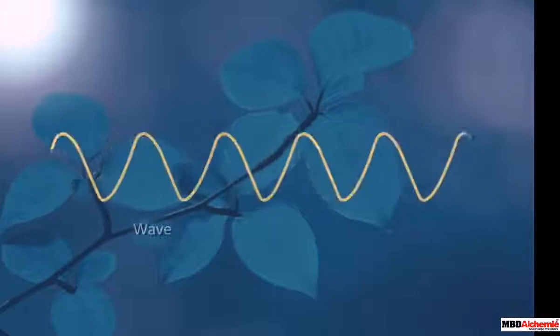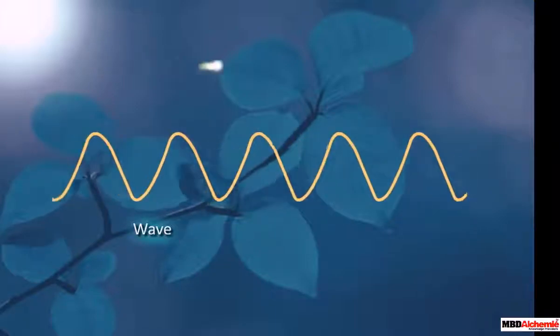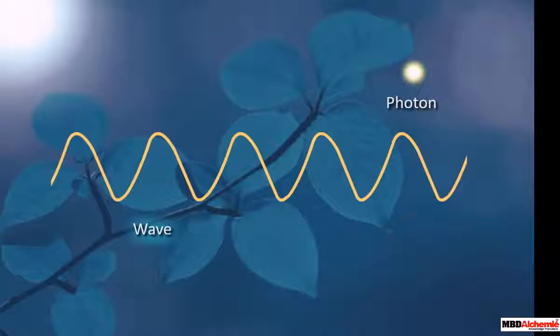The sunlight has both wave and particle nature. The particles, or photons, are the smallest units of light. Photons oscillate along a path which is measured as wavelengths.